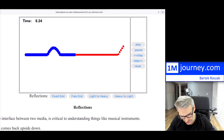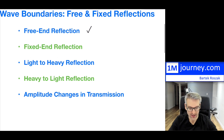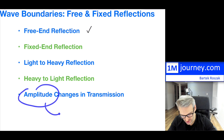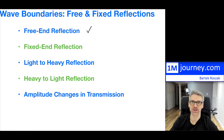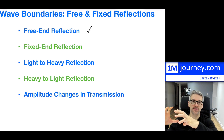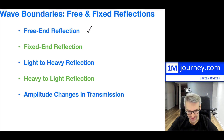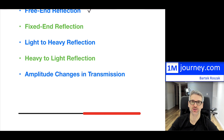I encourage you to simulate these on your own so you can see it and intuitively walk yourself through. The amplitudes will change in transmission because some energy gets reflected back. But the total energy, consistent with conservation of energy, should be preserved — the reflected and transmitted wave or pulse should sum up to the total energy it started with, unless there are losses. Thank you for watching this introduction to free-end and fixed-end reflections and boundary conditions between light-to-heavy and heavy-to-light strings. We'll see you in a future video.